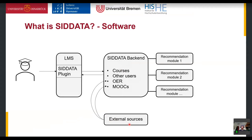The back end saves data from external repositories — open educational resources, MOOCs — but also data from the learning management system, such as courses, or other users in cases where users want to be connected with each other. The back end also provides so-called recommendation modules, which are features the student can use. For example, the abroad recommendation cascade gives students information about what to do before going abroad. Another module could match students with similar interests. These modules are encapsulated and can be added or removed dynamically, making SIDdata very flexible.